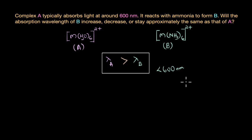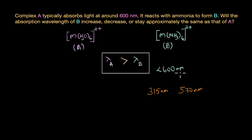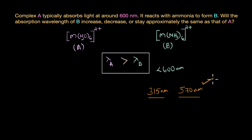Now let's say you have two wavelengths to choose from: 315 nanometers and 570 nanometers. Both are less than 600 nanometers, but which is the more likely absorption wavelength of B — 315 nanometers or 570 nanometers, which is closer to 600 nanometers? It turns out that complex B is more likely to have an absorption wavelength of around 570 nanometers and not 315 nanometers.